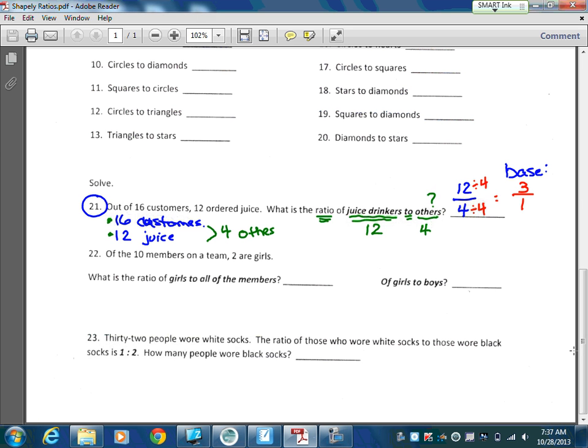Okay, let's try another one, number 22. Of the 10 members on a team, two are girls. What's the ratio of girls to all members? And then there's a second piece to that, of girls to boys. Okay, so let's gather information first. We have 10 members on a team, two are girls. Okay, so here's my information. I have 10 members, which really means total. Two of them are girls.